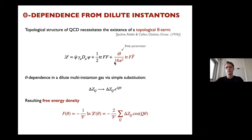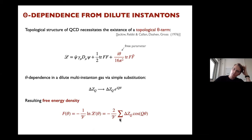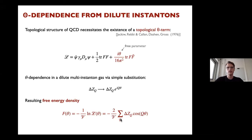Due to topology, we add the theta term to the QCD Lagrangian, proportional to the topological charge density, with theta as an extra free parameter. Incorporating this in the dilute gas is straightforward: substitute ΔZ_q → ΔZ_q · e^{iqθ}, sum again, and the theta-dependent free energy is a sum over all topological charges of cosine(q·θ), where coefficients come from the genuine multi-instanton contributions.